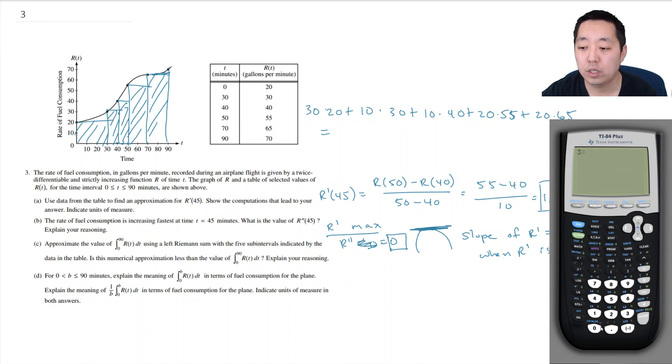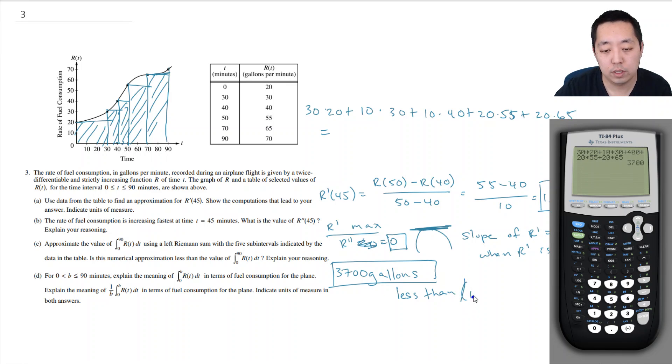So let's see, 30 times 20, plus 10 times 30, plus 400, 10 times 40, plus 20 times 55, plus 20 times 65. 3,700. So we got 3,700. The units of this are gallons, because this is per minutes, and this is gallons per minute. When I multiply the two, I just get gallons. It is also less than, it's less than, or an underestimate. And usually you want to say it's an underestimate because R of t is increasing. If it were decreasing, it would be an overestimate.